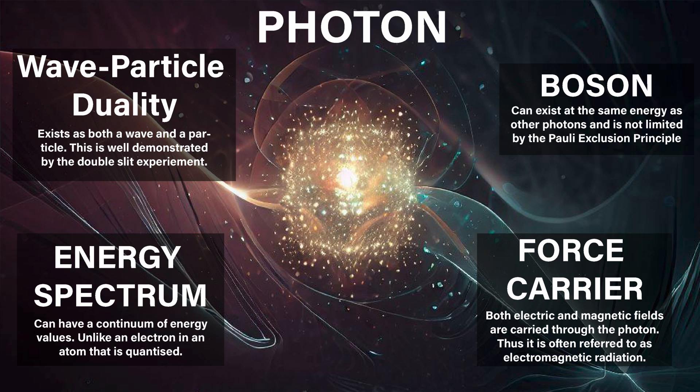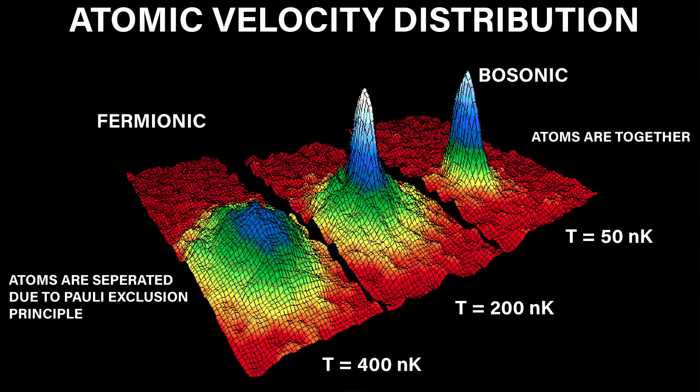The quintessential boson is a photon. They don't interact with each other and thus can all exist in the same state. It turns out that at really cold temperatures atoms can do the same thing. Normally fermionic atoms can band together to make bosons, which allows them to share the same state. When this happens, the atoms condense into a condensate, all acting in unison as a single quantum system.